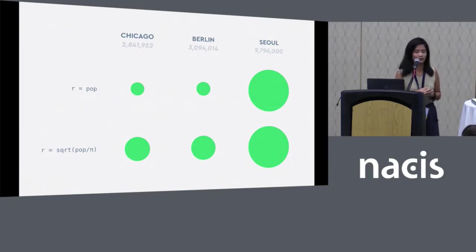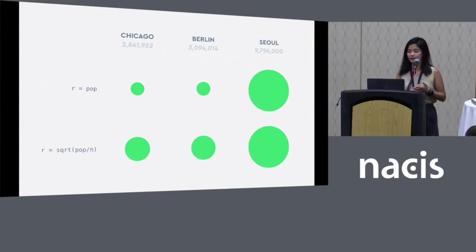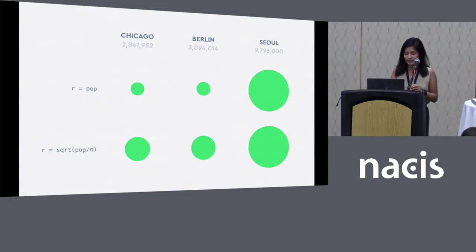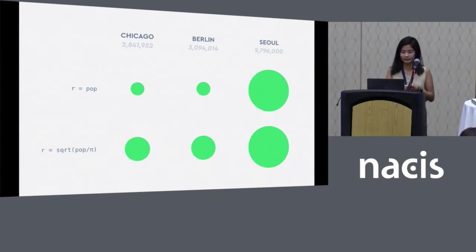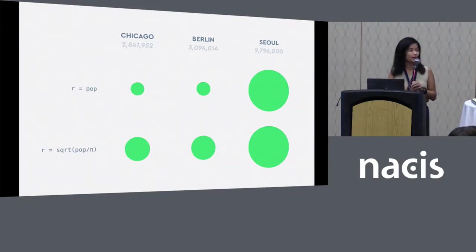But what I really want to do is scale the area of the circle, since this is really how we perceive the circle's visual size. Using a little math with expressions, I can write a formula for more accurately scaled circles. On the top is an example of a radius with a direct relationship to population.